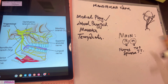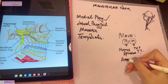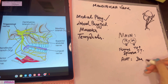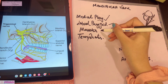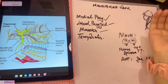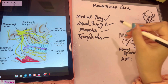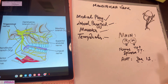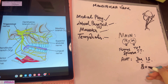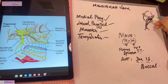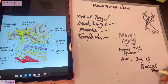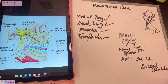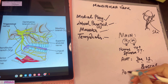The anterior division gives three motor branches and one sensory branch. The three motor branches supply the remaining muscles of mastication: the nerve to the lateral pterygoid, the masseteric nerve (which passes through the mandibular notch to supply the masseter), and the deep temporal nerves which supply the temporalis muscle. The one sensory branch is the buccal nerve, which travels downwards and forwards to supply the skin of the cheek and the mucous membrane over the buccinator.